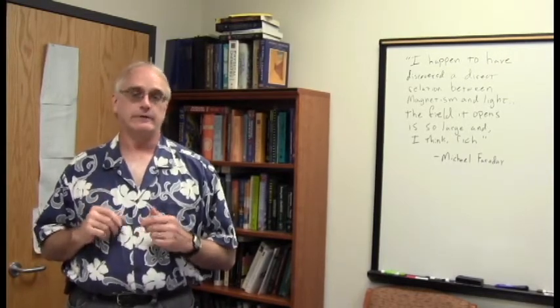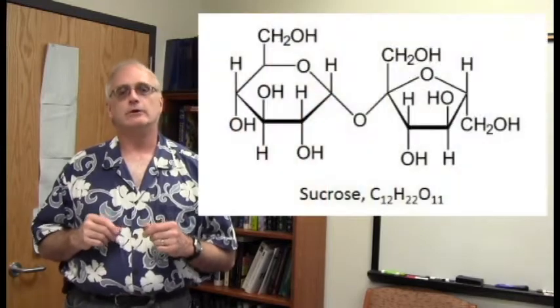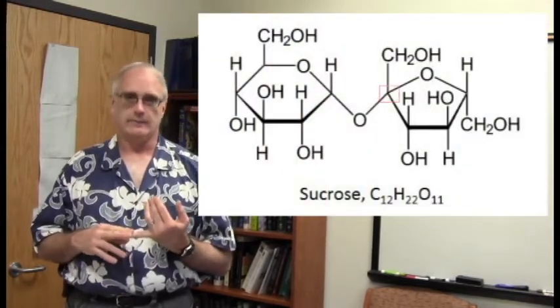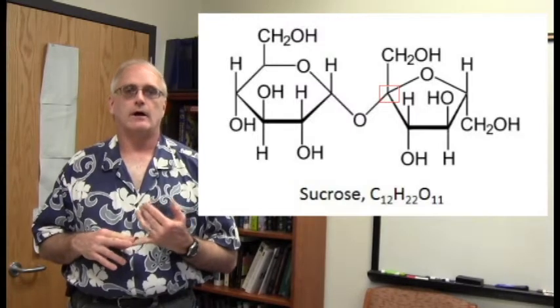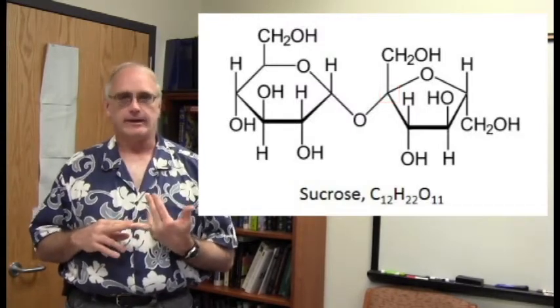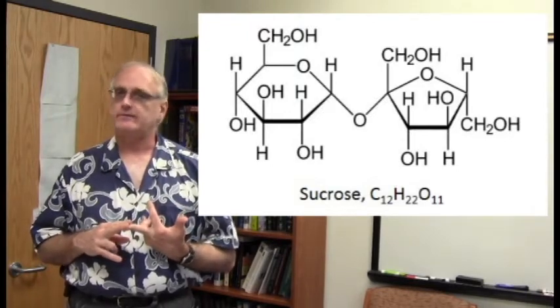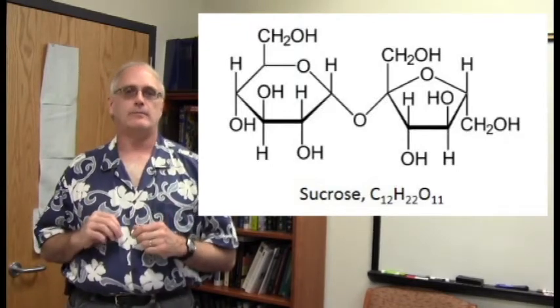If you look at the structure, the known structure of sucrose, you will note that there is only one quaternary carbon in the molecule. There are eight methines in there, quite a few, three methylene, CH2s, and no methyl groups.